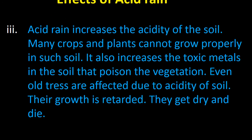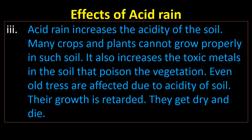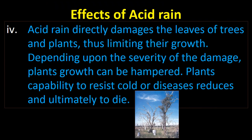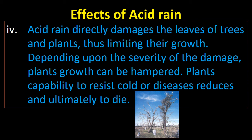Acid rain increases the acidity of soil, so many crops and plants cannot grow in such soil. It also increases the toxic metals in the soil that poison the vegetation. Even old trees are affected due to soil acidity — their growth is retarded, they get dry and die. Acid rain directly damages the leaves of trees and plants, limiting their growth, and depending upon the severity of damage, plants' capability to resist cold or diseases reduces and they ultimately die.